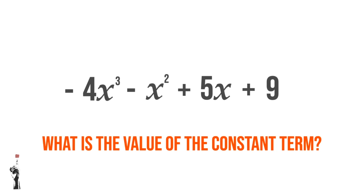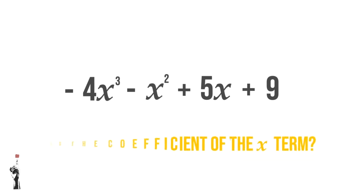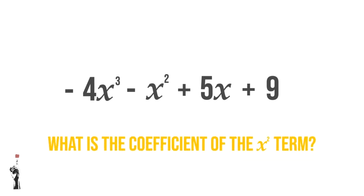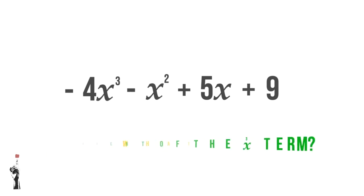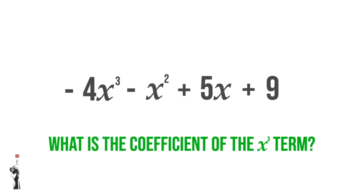First question: what is the value of the constant term? That's a number without a variable. In this case, it's positive 9. Next question: what is the coefficient of the X squared term? The X squared has no number in front of it, which means it's 1. But there's a negative sign, which means the coefficient is negative 1. What is the coefficient of the X cubed term? The number in front is 4, but the sign is negative, which makes the coefficient negative 4.